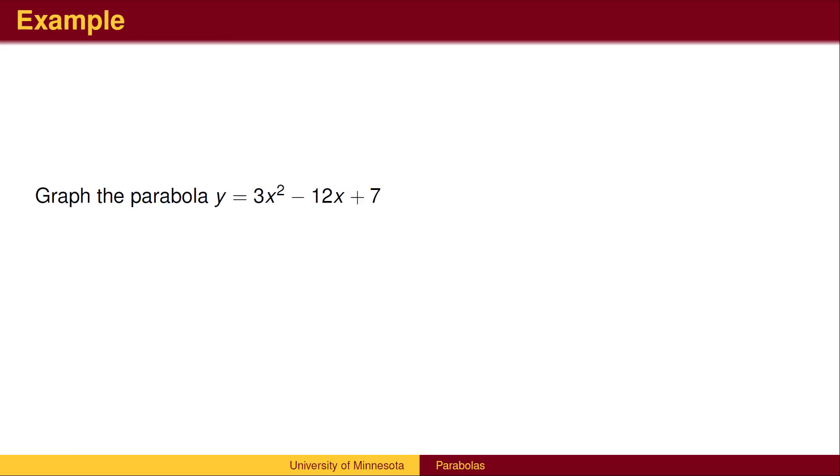We can now use this procedure to graph a parabola from its equation. First, we find the axis of symmetry, which is at x equals negative b over 2a. This also gives us the x-coordinate of the vertex. To find the y-coordinate of the vertex, plug the x value 2 back into the original equation. We get the y-coordinate of the vertex to be negative 5.